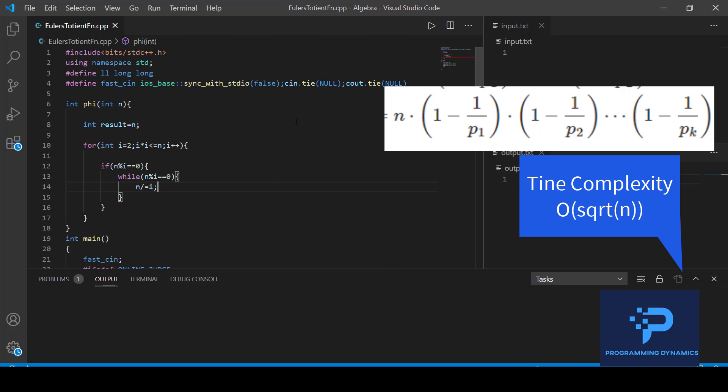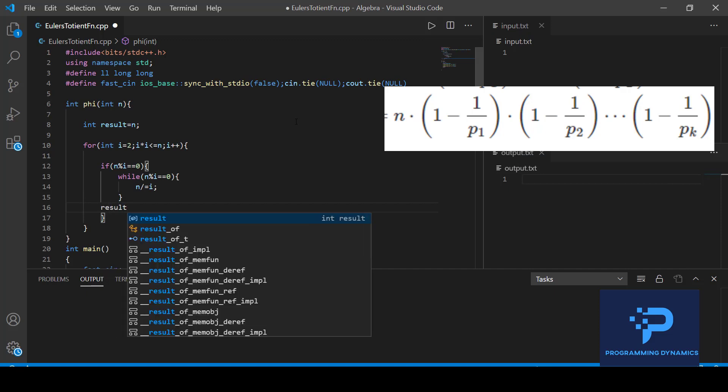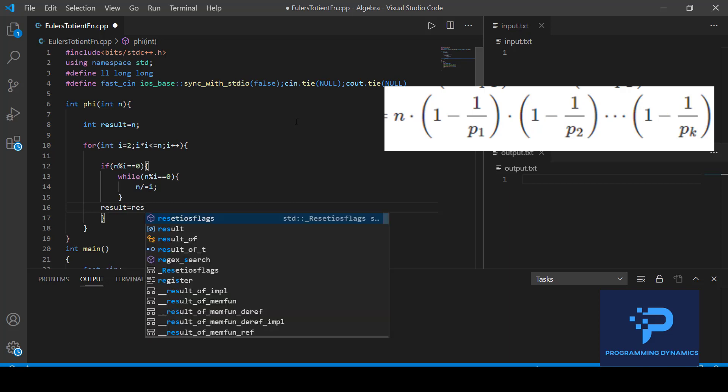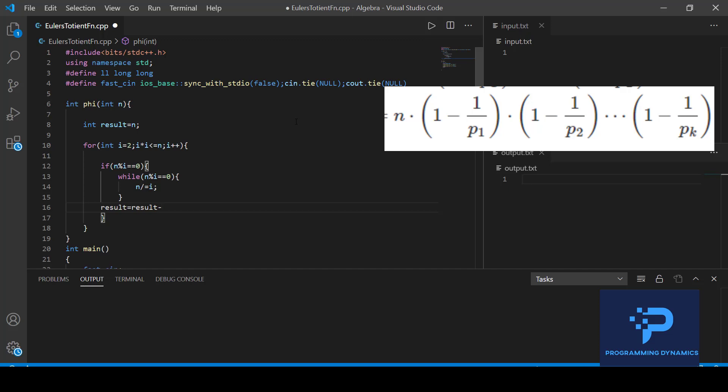And after this we subtract result with result minus or we can write it in short hand notation as result minus equal to result by i. If you observe carefully this is exactly the equation which we had derived through the three properties and which is shown in the screen also. So it might look different but it's exactly the same.